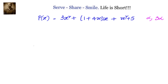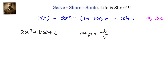Our approach to solve the problem will be to leverage the relationship between zeros and coefficients of a quadratic polynomial. If ax² + bx + c is our quadratic polynomial and alpha, beta are its zeros, then the sum of the zeros is given by minus b by a, and the product of the zeros is given by c by a.